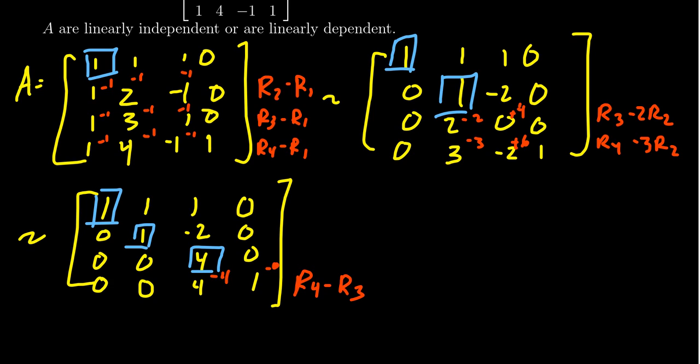We then are going to get a matrix that looks like 1, 1, 1, 0; 0, 1, -2, 0; 0, 0, 4, 0. If you want to scale that to a 1, that's okay, but we didn't need to do it. 0, 0, 0, and then a 1. Like so.